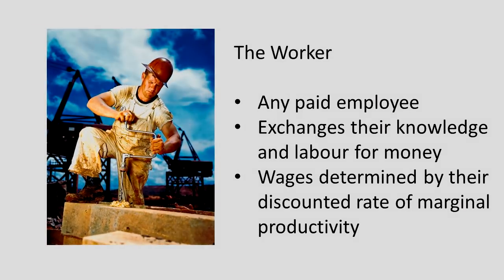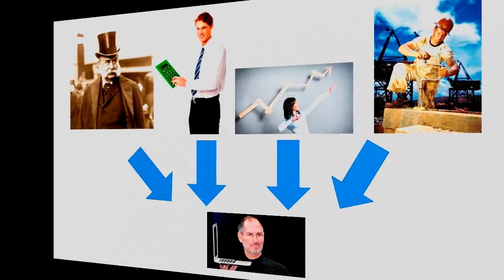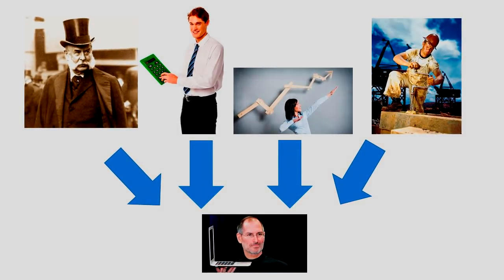Finally, there is the worker. This is any paid employee who exchanges their knowledge and labour for money. Wages are determined by their discounted rates of marginal productivity. I will not be talking about the worker much further in this video, but if you want to see how to calculate the discounted rates of marginal productivity, see my video 'Pricing a Cup of Coffee,' which you will find in AA's Core Lessons. Now, let's get back to the capitalist, the entrepreneur, and the manager.